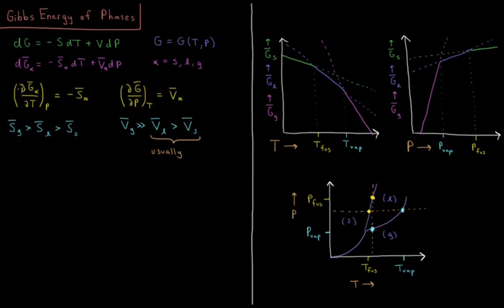Just as we did for the standard or for regular Gibbs energy, the partial derivative of the molar Gibbs energy of a phase with respect to temperature at constant pressure is equal to the molar volume of that phase.